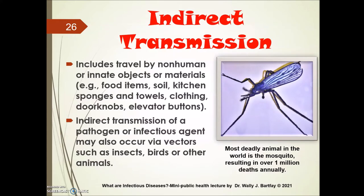Indirect transmission includes travel by non-human or inanimate objects or materials such as contaminated food items, soil, kitchen sponges and towels, clothing, doorknobs, and elevator buttons. Indirect transmission of a pathogen may also occur via vectors such as insects, birds, or other animals. Here you see a picture of a mosquito.